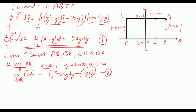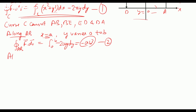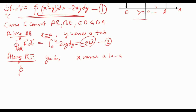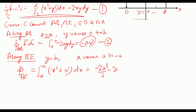Along line BE: y = b and x varies from a to −a. The line integral along BE is ∫ₐ^{−a} (x² + b²) dx, which evaluates to −2a³/3 − 2ab². Call this equation 3.